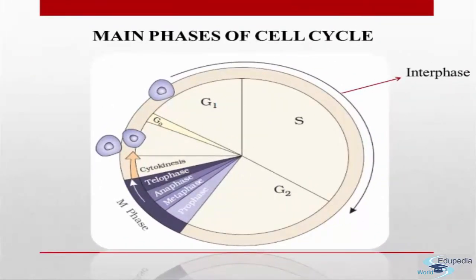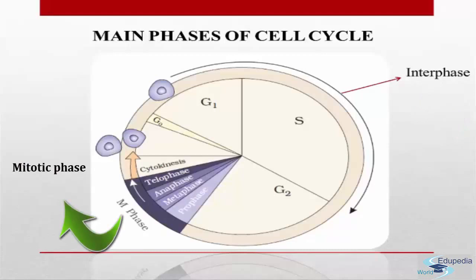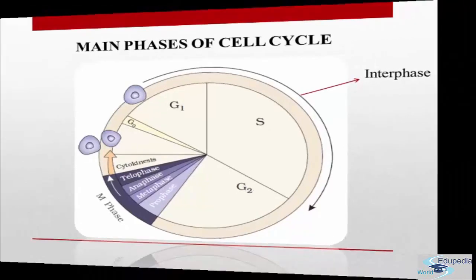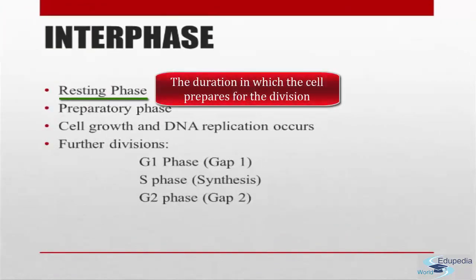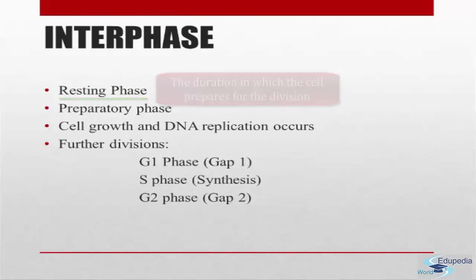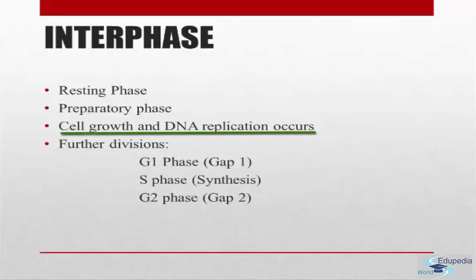The main phases of the cell cycle are the interphase and the M phase, also known as the mitotic phase. Interphase, which is better known as the resting phase, is the duration in which the cell prepares itself for division. During the interphase, the cell undergoes cell growth and DNA replication.